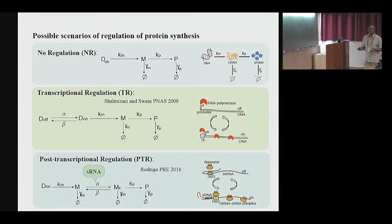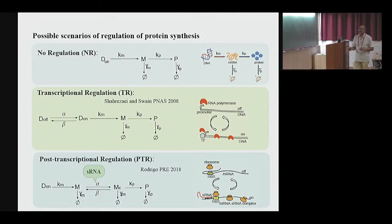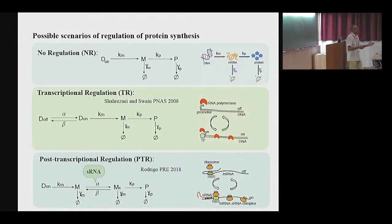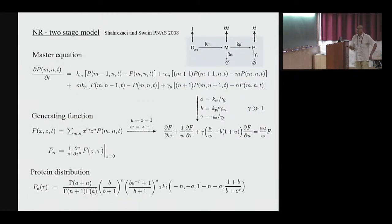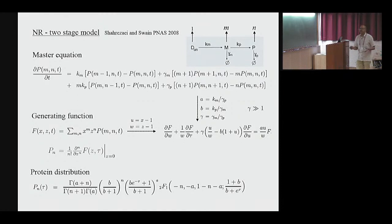These models are quite established in the literature. In post-transcriptional regulation, the regulation is not at the gene level but at the level after transcription has taken place. It changes the mRNA into two states — either active or inactive. Only if the state is active can it translate. This regulation is brought about by small RNA molecules, which help the ribosome bind so that translation can take place. The strategy will be simple: set up the corresponding master equations and solve for the probability distribution.